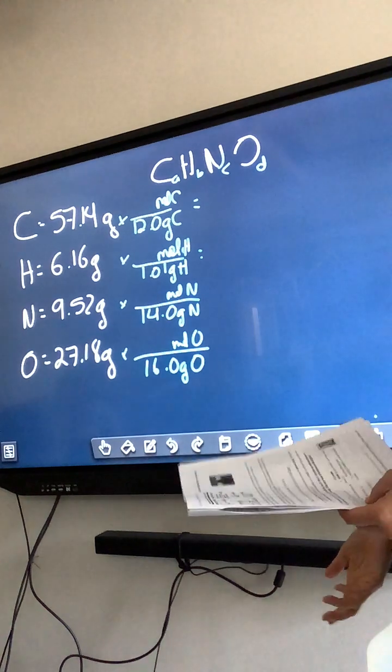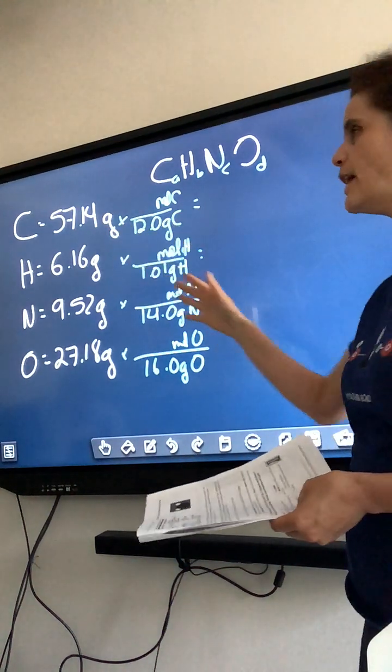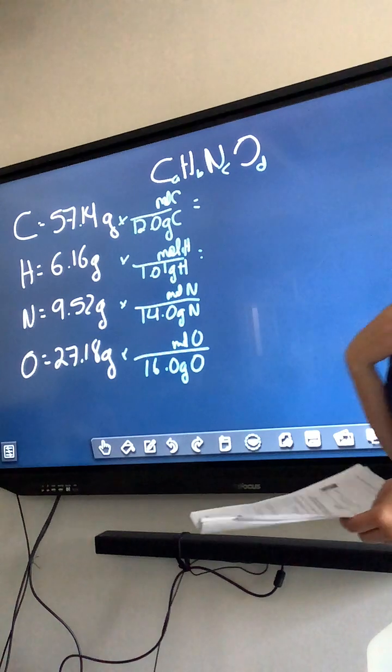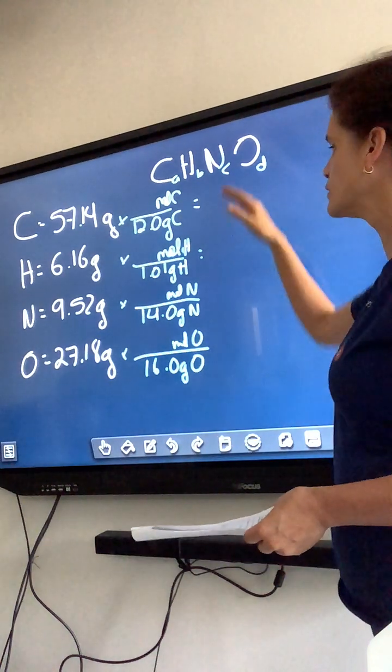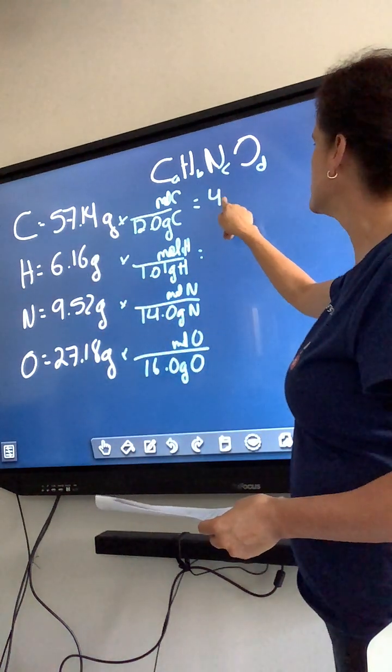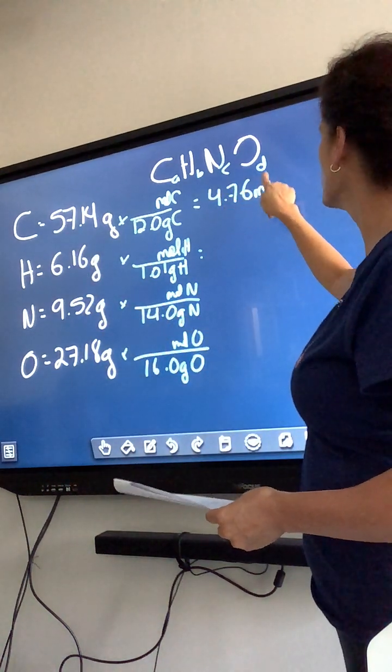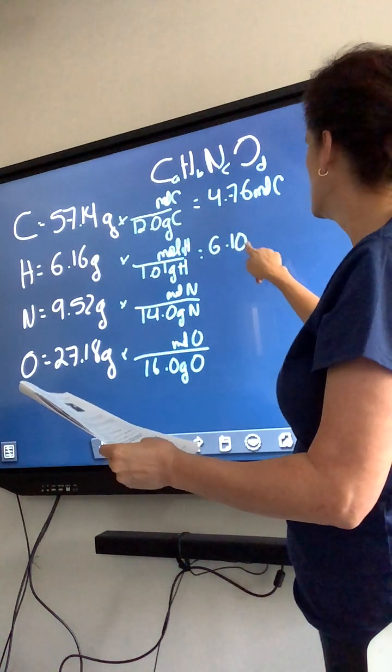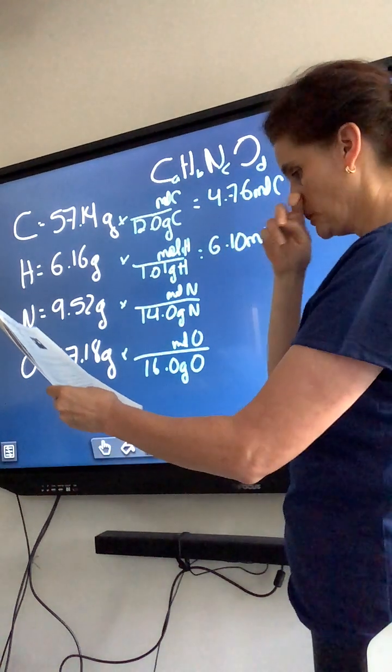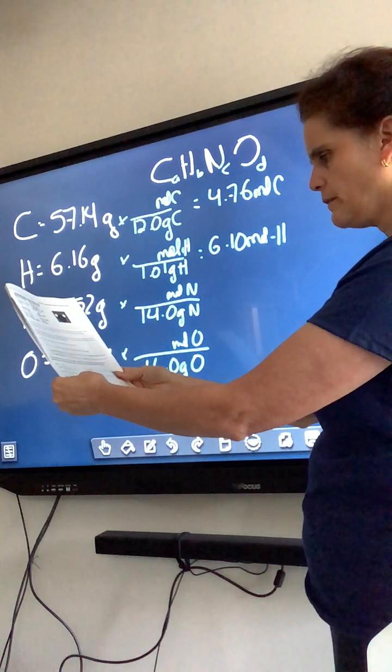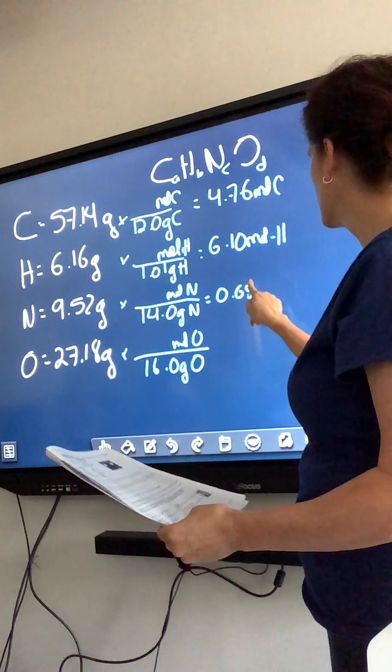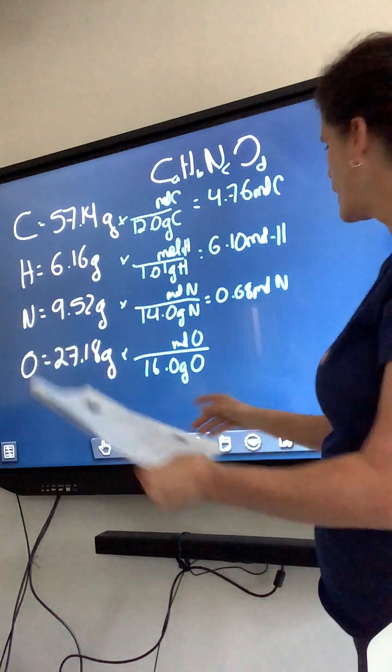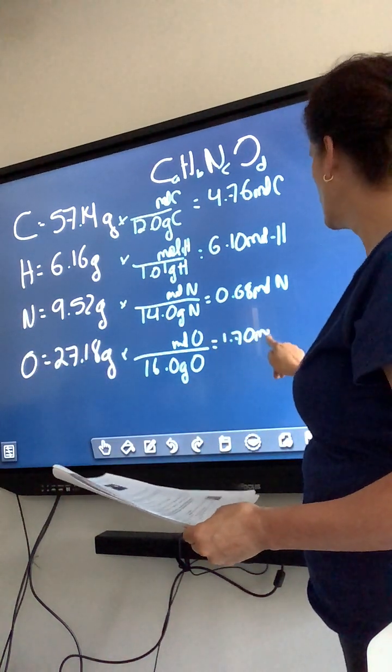So, I'm going to write the numbers. I had some of you type things wrong in the calculator several times. So, I think you understood the process. All the things were written properly, and the answers were all wrong. So, some people in here never actually did the problem themselves. So, you have 4.76 moles of carbon. You have 6.10 moles of hydrogen. You have 0.68 moles of nitrogen. And you have 1.70 moles of oxygen.